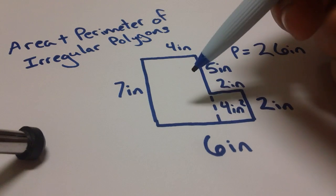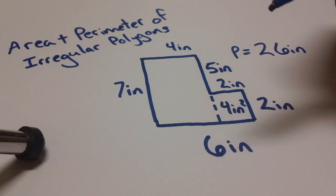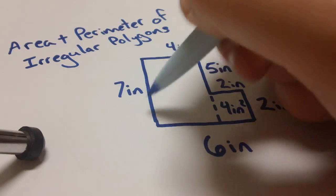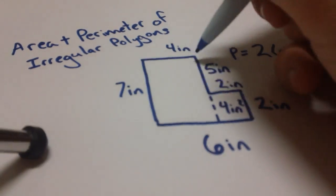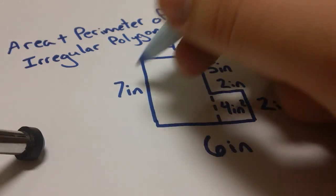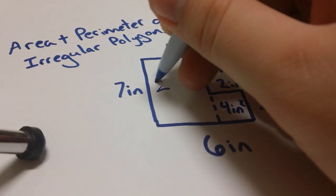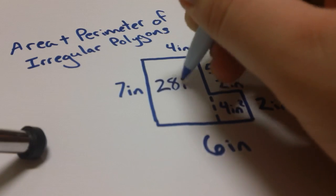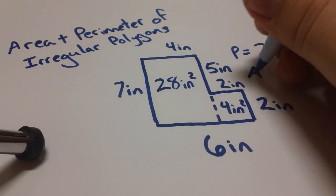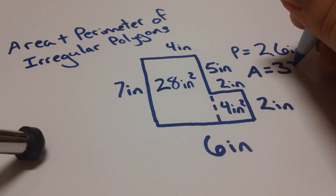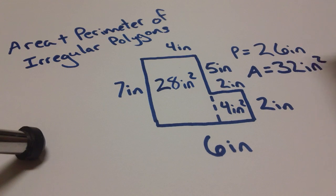Now this box up here, yet again, you've got to be careful to use the right numbers. Seven inches, of course, is all the way down. And then we're going to have four inches because it's only four inches wide. So we'll multiply those together, get 28 inches squared. Now we can add our two numbers together and we will get the area is equal to 32 inches squared.